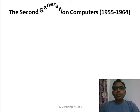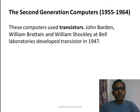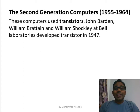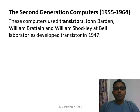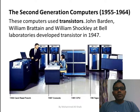The second generation computers were introduced from 1955 to 1964. These computers used transistors instead of vacuum tubes, designed by John Bardeen, William Brattain, and William Shockley at Bell Laboratories in 1947. They were somewhat lesser in size — only a room used to get occupied.